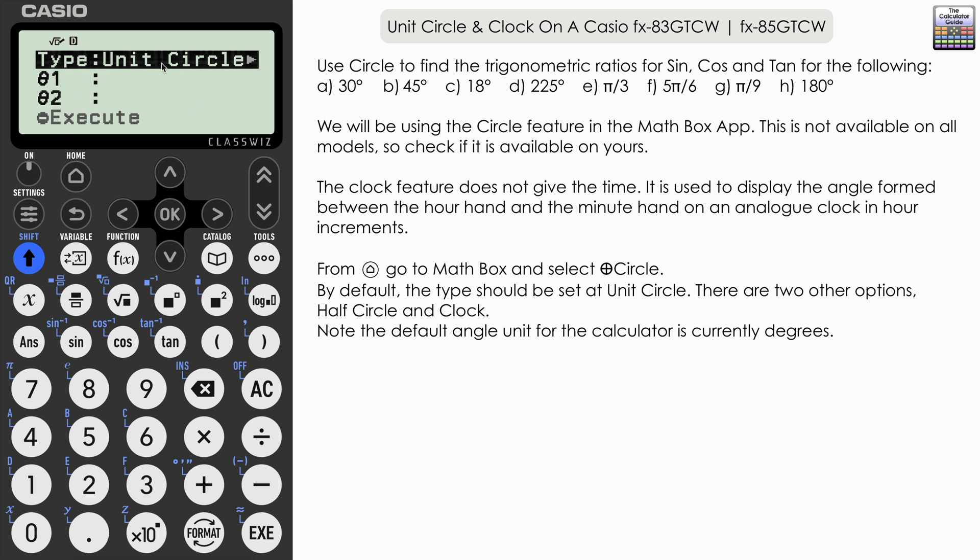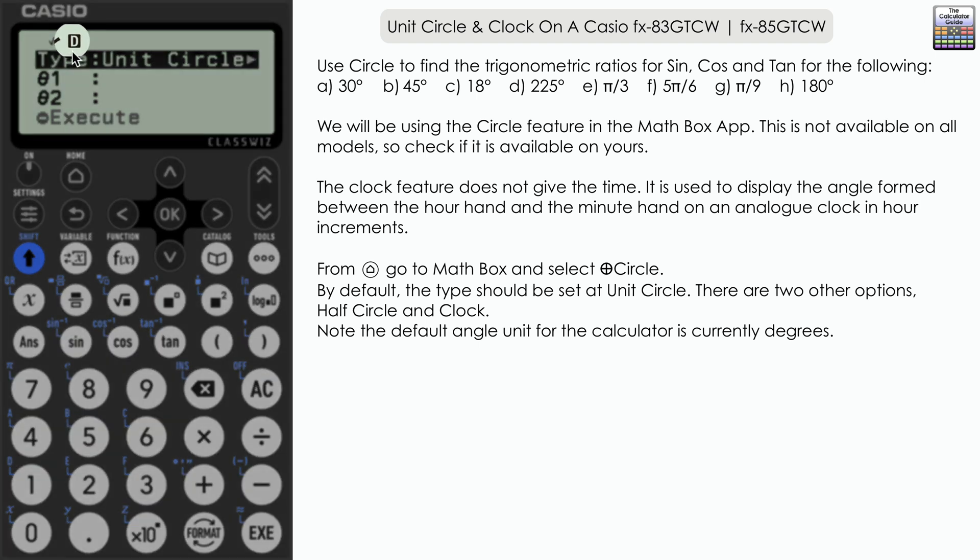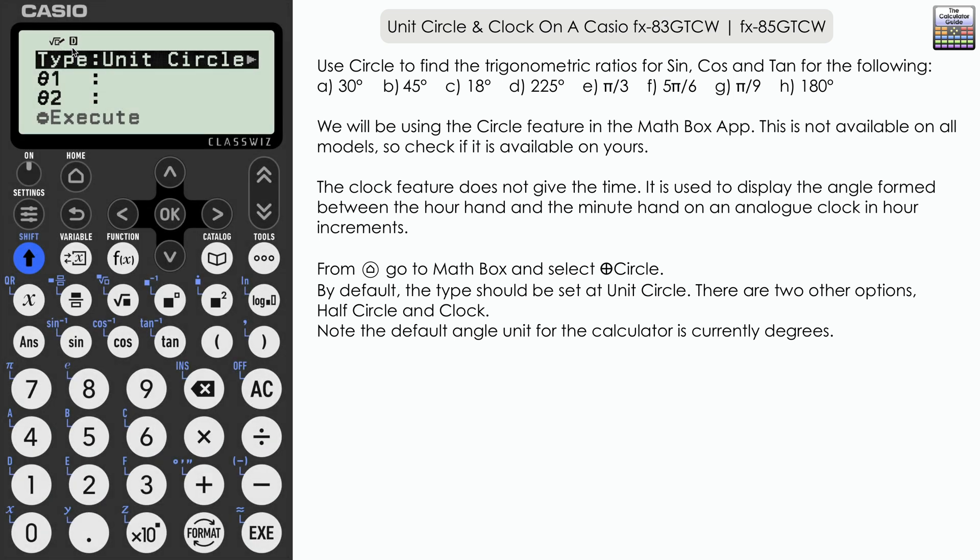It's worth noting that the angle unit that the calculator setting is degrees, notified by this little d at the top here. If we press execute at this point we can see the three options that are available: the unit circle, the half circle, and the aforementioned clock feature.